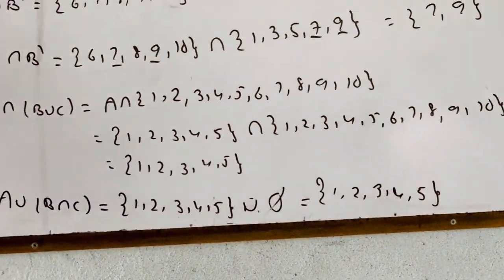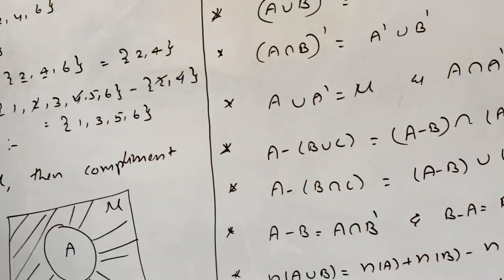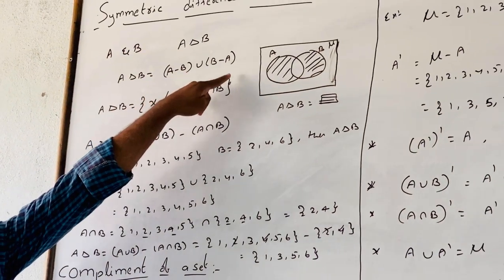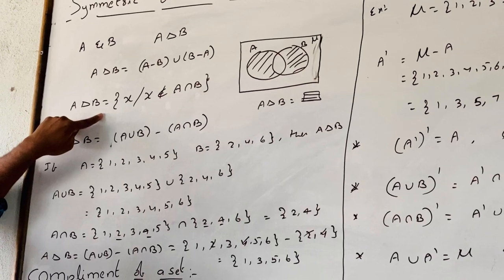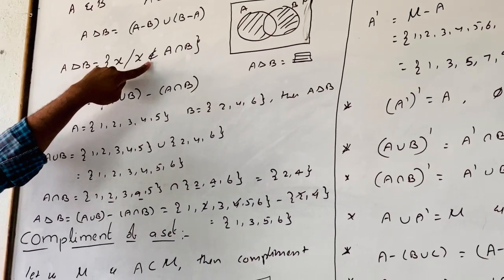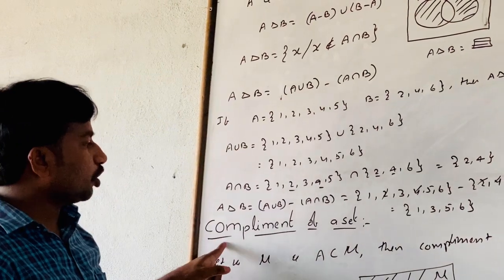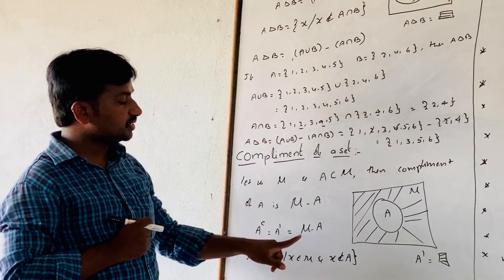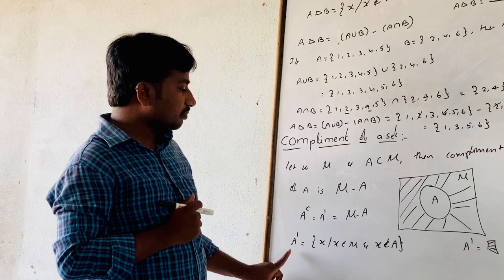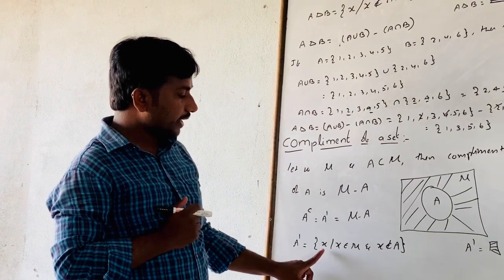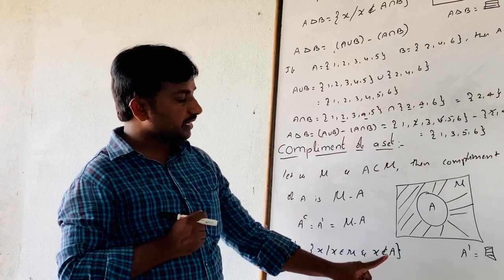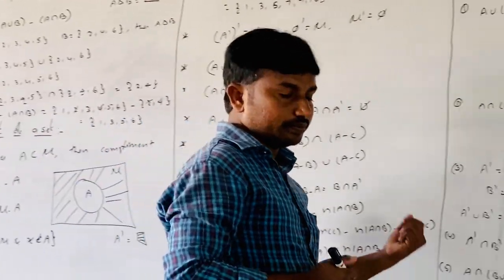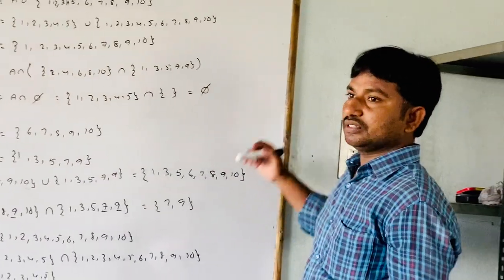Look and observe: the symmetric difference of two sets A and B is denoted by A delta B, equals A minus B union B minus A. The set builder form is {H such that H does not belong to A intersection B}. The complement of set A, denoted A power C or A dash, equals mu minus A. The set builder form is {H such that H belongs to mu and H does not belong to A}. We covered some important results and example problems. Thank you.